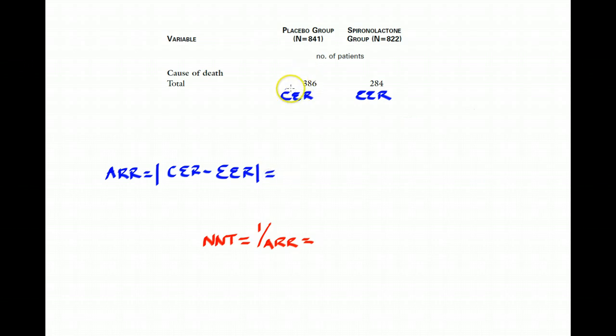So how do we make these calculations? Well, the control event rate is just the percentage of patients in the control arm, in this case the placebo arm, that had the outcome of interest. So 386 patients who were assigned to placebo died out of a total of 841 patients. And when you make that calculation, it comes out to 46%. So my control event rate is 46%.